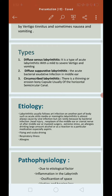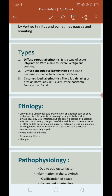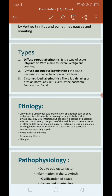The third type is circumscribed labyrinthitis, which involves thickening or erosion of the bony capsule, usually of the horizontal semicircular canal. There is formation of a bony structure in the inner ear, mainly along the horizontally placed semicircular canal, which is a part of the inner ear.